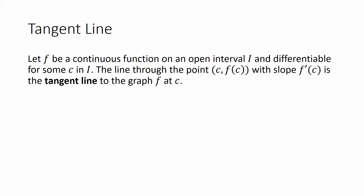In terms of what I was saying just a moment ago, if we let f be that continuous function and we let f be differentiable at c, then the line that I was drawing through the point c comma f with slope being the instantaneous rate of change is called the tangent line to the graph at the value of c.